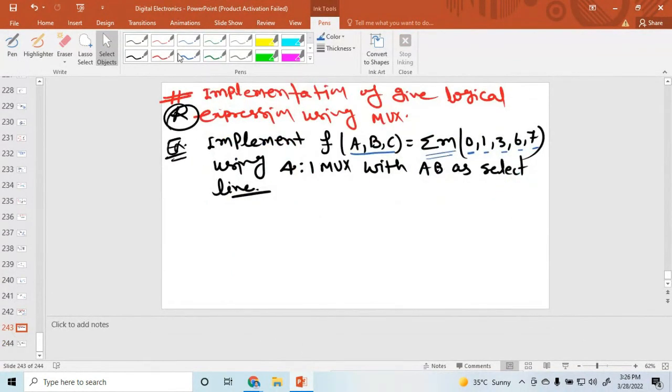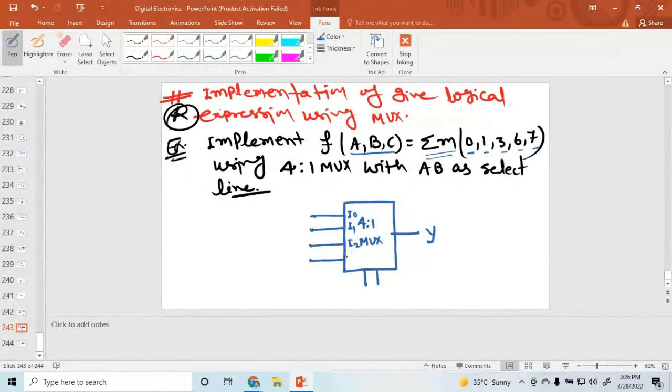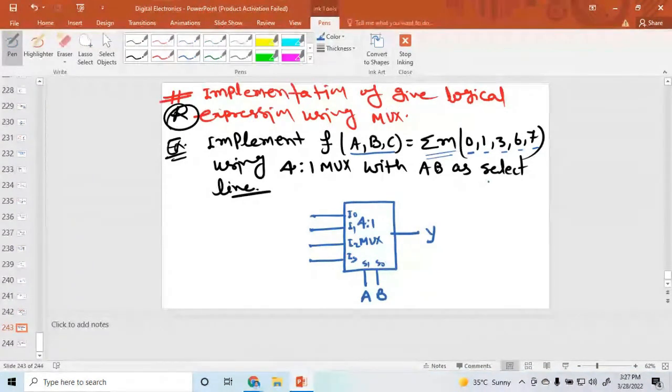So how to design the 4 to 1 MUX? Here the 4 to 1 MUX is this. 4 to 1 MUX having 4 inputs, 2 selection lines, 1 output Y. And this input is I0, I1, I2, I3. Selection line S0, S1. So the values are A and B.